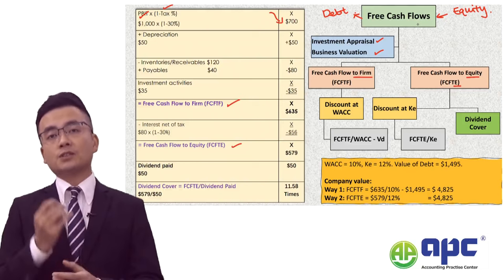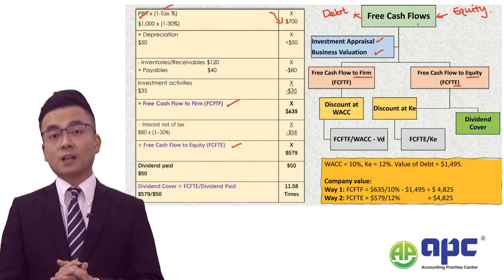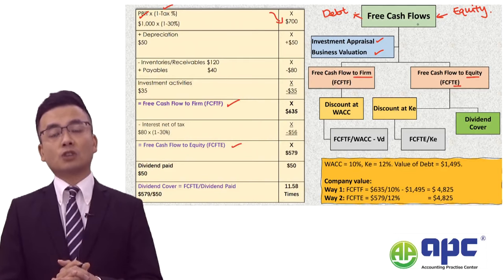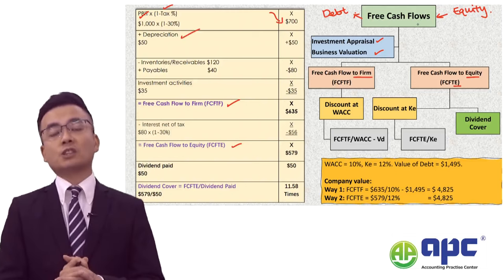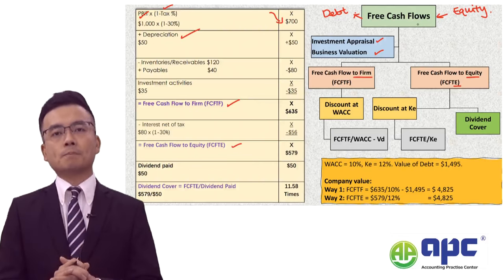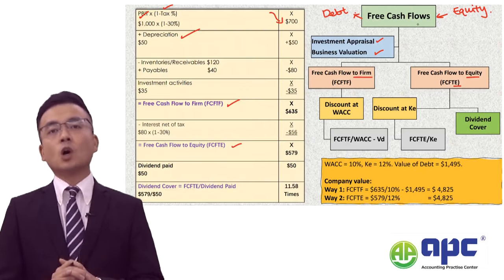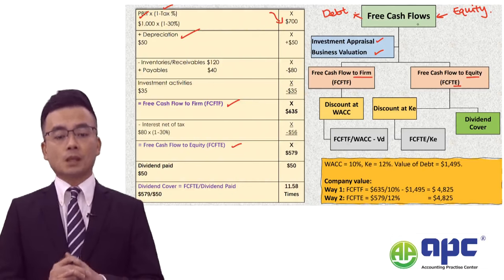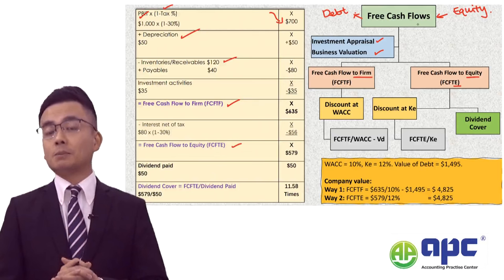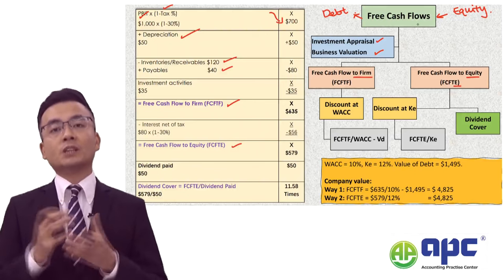The second step is to convert the accounting profit into a cash profit. To calculate the accounting profit of $700, we already subtracted non-cash expenses such as depreciation, so we need to add those back — say $30 of depreciation. We then subtract $120 for investment in working capital such as buying inventories or extending credit to customers, and add back $40 where we owe money to suppliers.